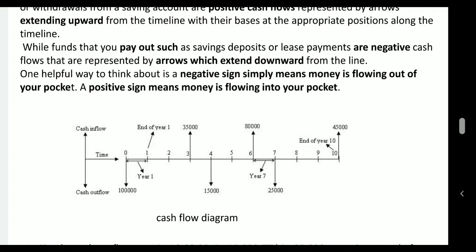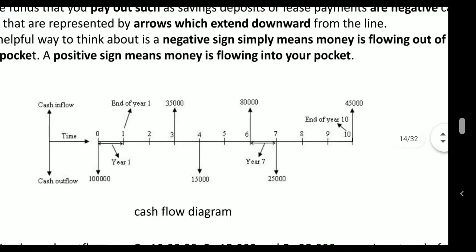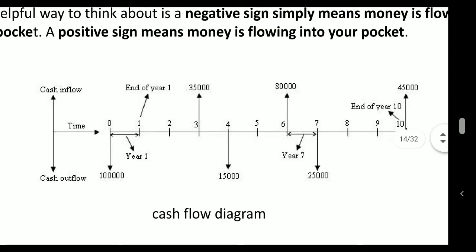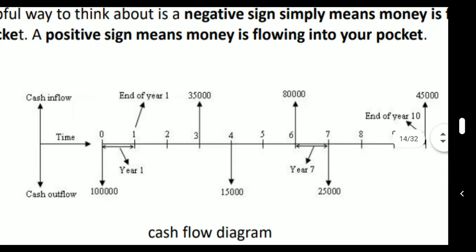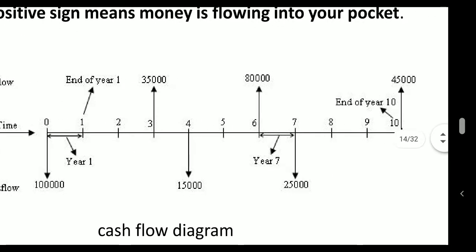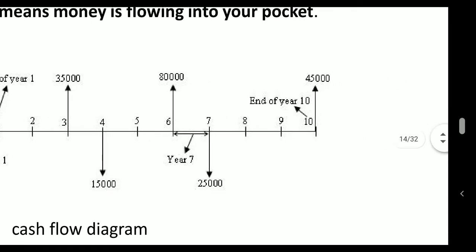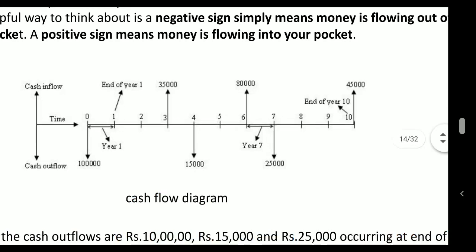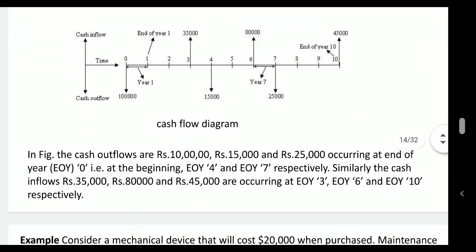Negative sign means money is flowing out of your pocket; positive sign means money is flowing into your account. For example, on the timeline at time period zero, one lakh money is outflow — downward arrow. At the end of three years, you are getting 35,000 inflow. At the end of the fourth year, 15,000 is outflow. At the end of 10 years, you are receiving 45,000. These are all the cash flows represented.